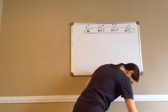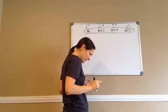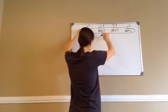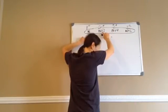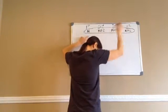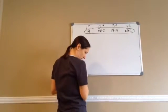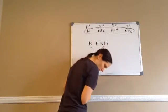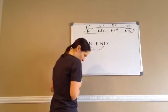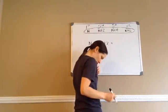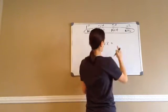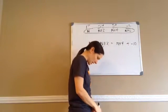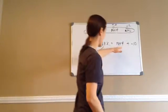Now, knowing that, listen to this: Find 3 consecutive even integers such that the sum of the first and the second equals the sum of the third and negative 10. So here's the problem — find 3 consecutive even integers. The sum of the first and second equals the sum of the third and negative 10. That's how we would set it up.